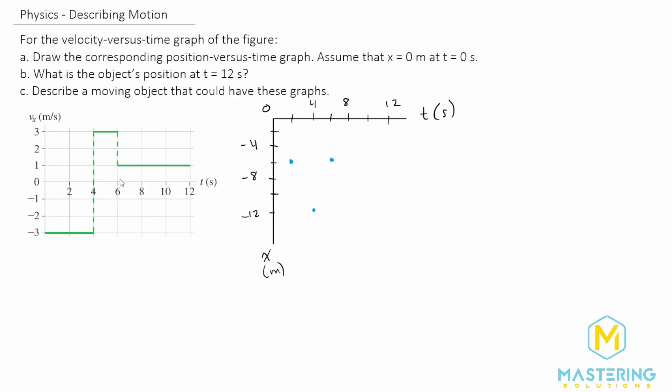So from six to eight, we have a one by two. So that's a positive two. So we'll come from a negative six to negative four at eight. And then at 10, we have another positive two. So two at 10, and then 12, it's zero.